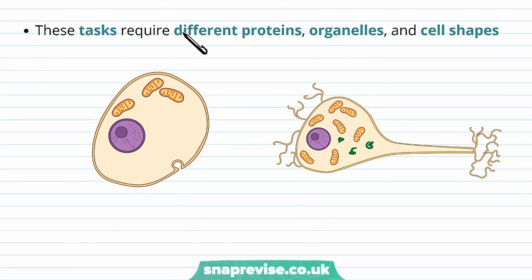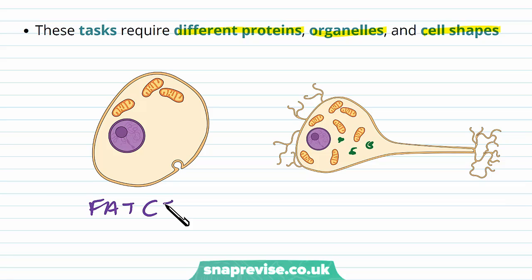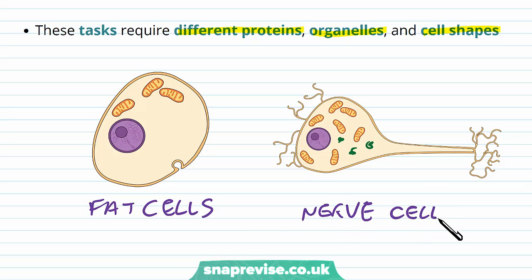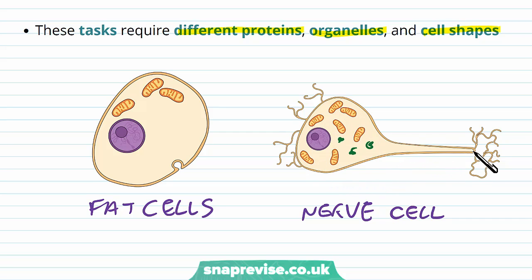Each of the tasks requires different proteins, different uses of organelles, and also changes to cell shapes. For example, adipocytes are cells found in fat tissue which are generally a round shape and look quite basic, whereas a nerve cell in contrast has an elongated shape with synapses, a long axon, and many more mitochondria. So wherever the cell is, it will be specialised and designed in a particular way to carry out the function needed at that place.